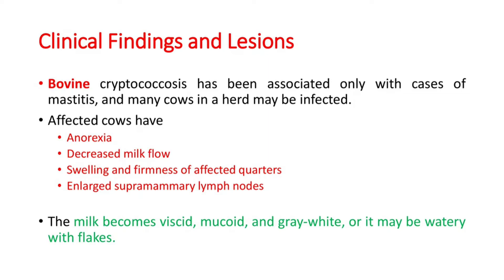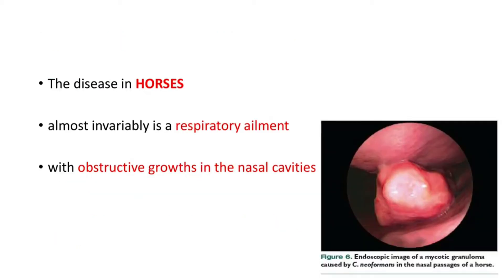Coming to clinical findings and lesions, let's see bovine cases first. Bovine cryptococcosis has been associated only with cases of mastitis, and many cows in a herd may be infected. These cows have anorexia, decreased milk flow, swelling and firmness of affected quarters, and enlarged supramammary lymph nodes. Milk becomes viscid, mucoid, and gray-white with thick white flakes.